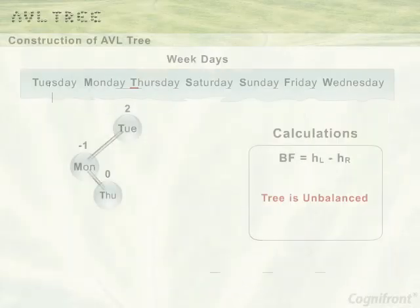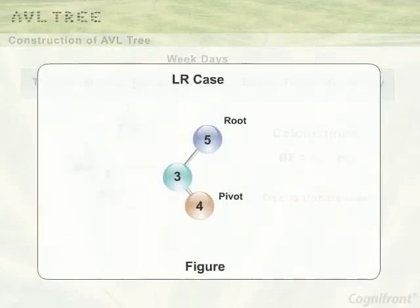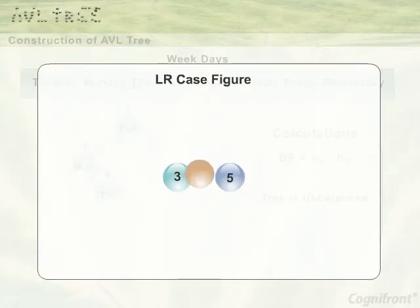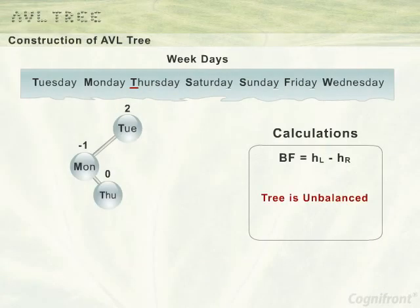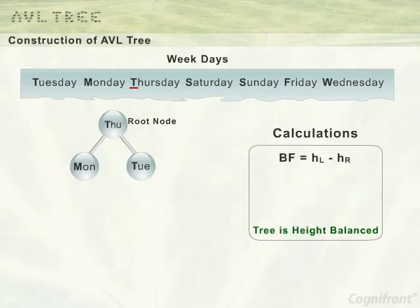Coming back to the example, the balance factor of Tuesday is 2. It is the ancestor of Thursday, as Thursday is inserted to the left subtree of Tuesday and to the right subtree of Monday. So the rotation to be performed is LR. In LR rotation, a child node takes the place of the root node. In the example, the rotation is performed around Tuesday — Thursday becomes the root node, Monday becomes the left subtree, and Tuesday becomes the right subtree. Now this is the height balanced tree.